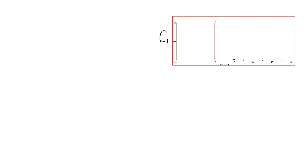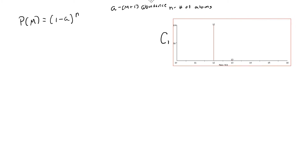For a single atom like carbon, there are equations to figure out the abundance of its different isotopic peaks. For the monoisotopic mass, the abundance equals (1 - a)^n, where 'a' is the M+1 abundance and 'n' is the number of atoms. For the M+1 ion, it equals n × a / (1 - a) × (1 - a)^n. Solving these by hand is incredibly complicated, and in practice you'll rarely walk through this math, but many mass spectrometry courses require it.